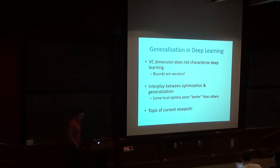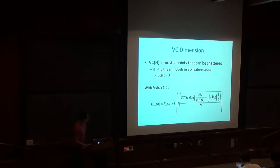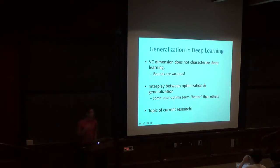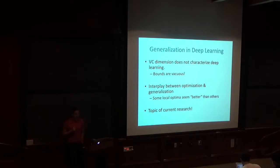A topic of contemporary research is analysis of generalization in deep learning. The VC dimension, even though it's a classic and cherished result in statistical learning theory, does not appear to be a very good characterization of deep learning. In particular, the VC dimension of a deep neural net is huge — gigantic — and so these bounds are basically just vacuous. And yet deep neural nets tend to generalize pretty well, better than you would expect from these bounds.